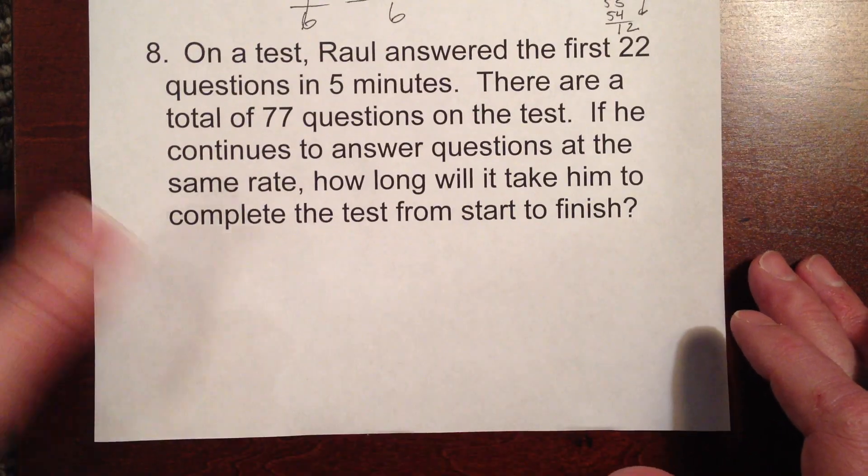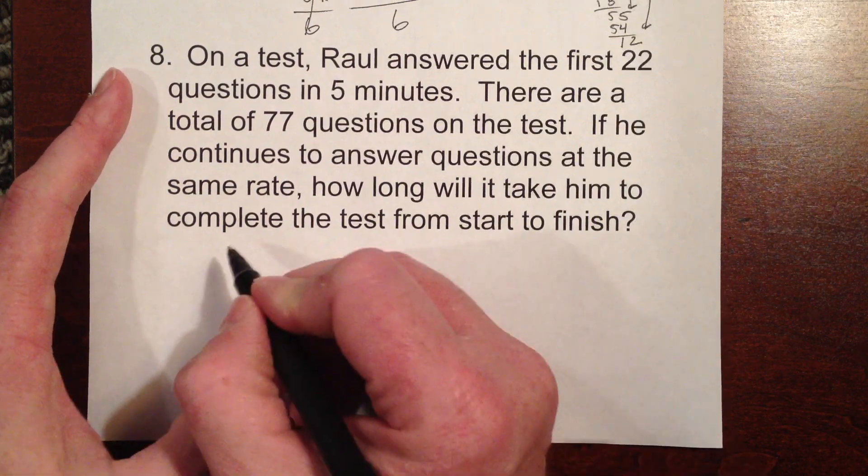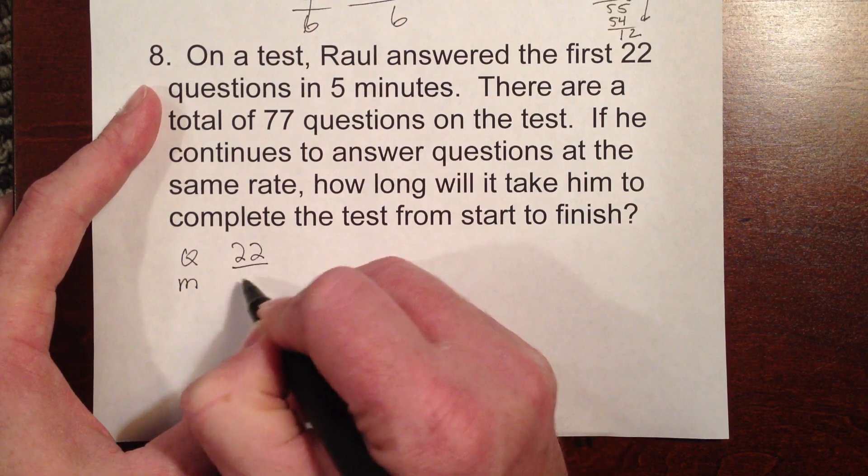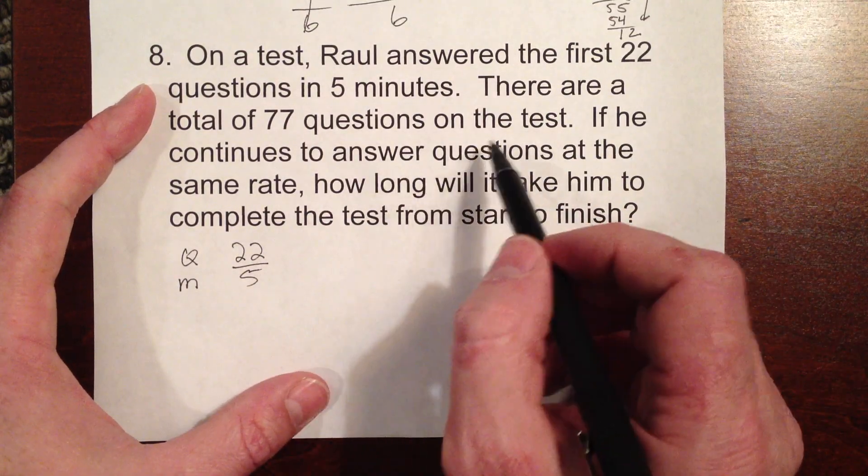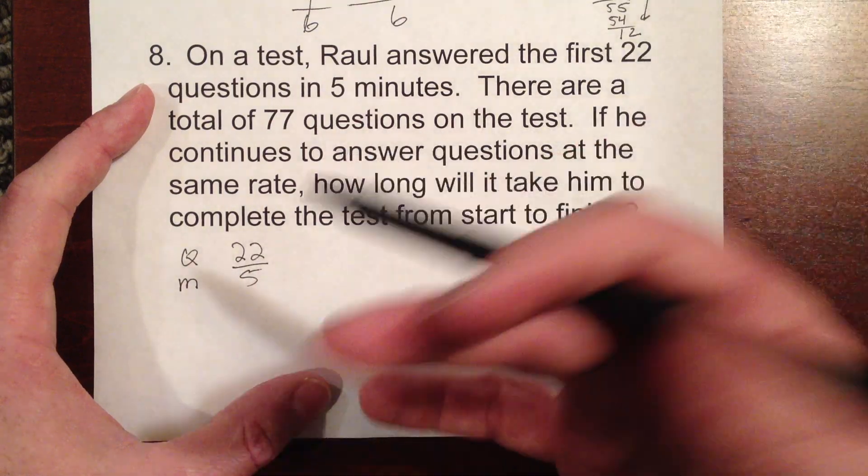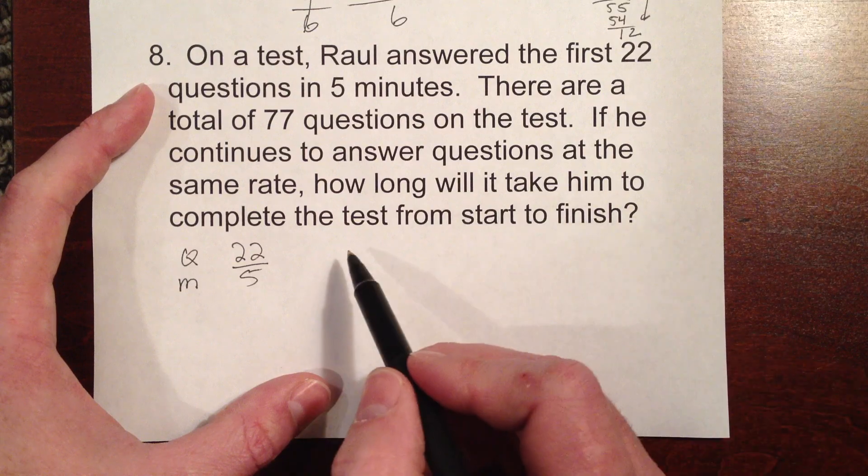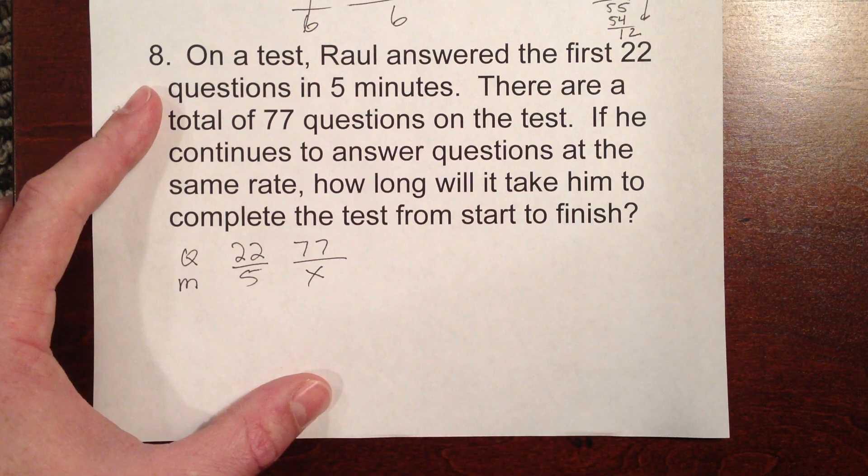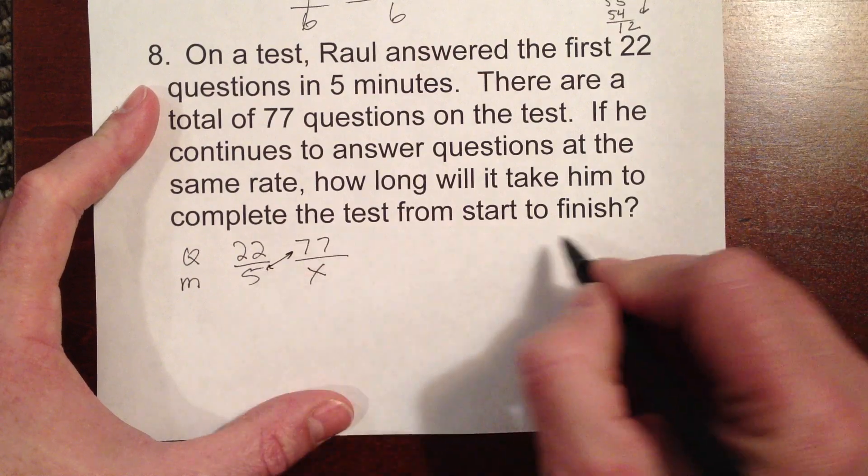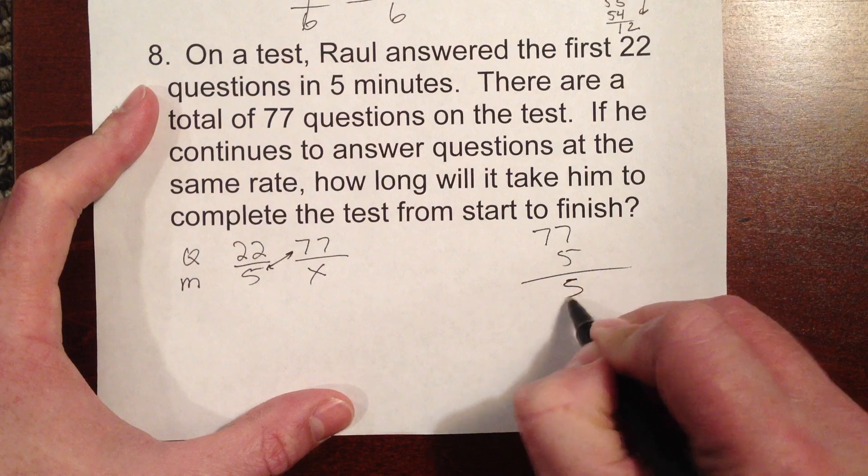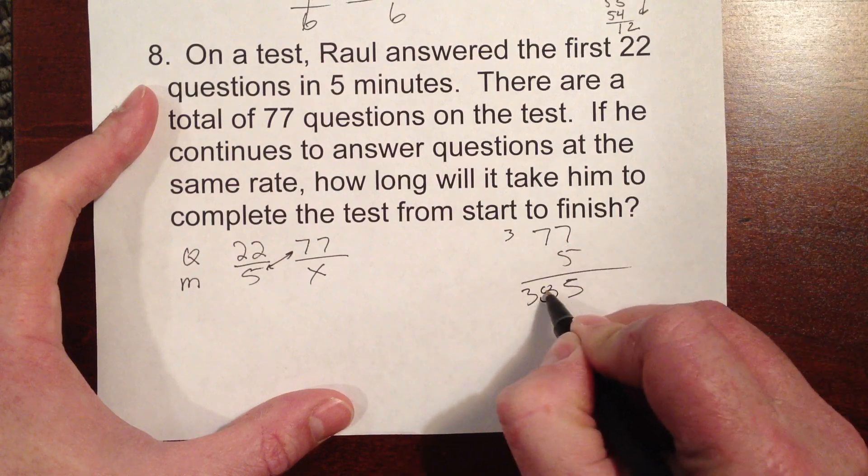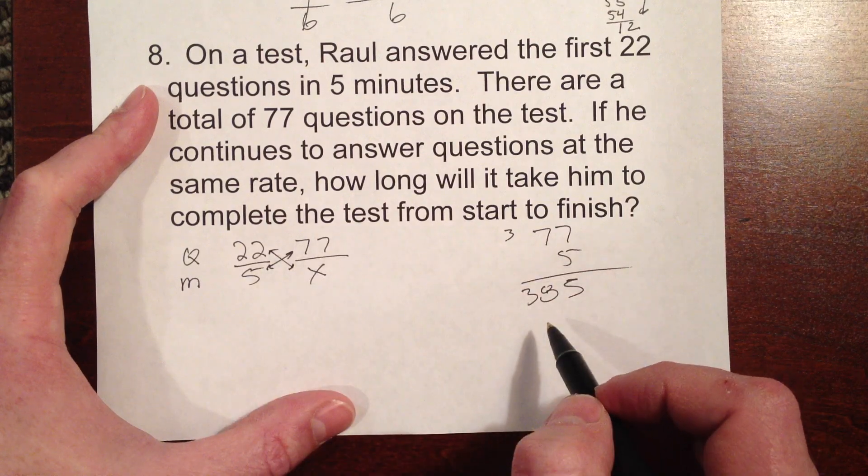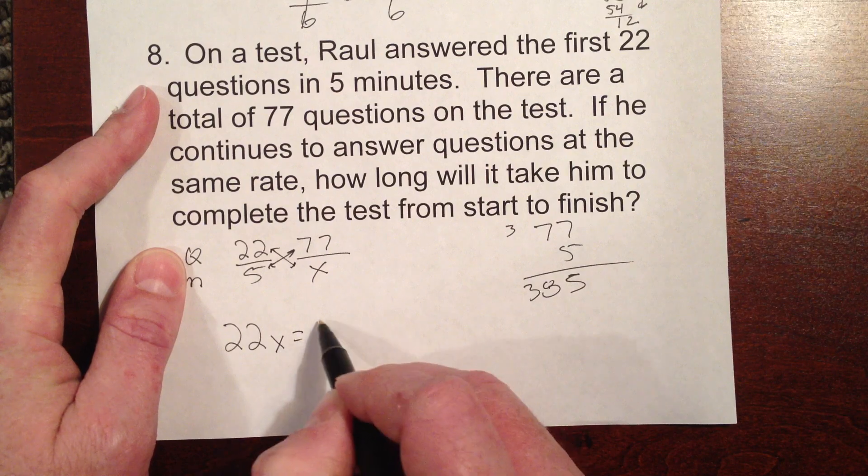Example number 8. On a test, Raul answered the first 22 questions in 5 minutes. So we can set this one up like this. Questions and minutes. 22 and 5 minutes. There are a total of 77 questions on the test. If he continues to answer the questions at the same rate, in other words, at the same speed, he uses about the same amount for each one, how long will it take him to complete the test from start to finish? Well, can I put a 77 over here for the number of total questions and an X down here for how many minutes that we don't know yet? And then can I cross multiply here and say 77 times 5 is 35. Carry my 3. And I got 35 again. And 38 for a total of 385.